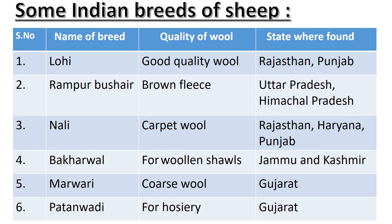After learning about different wool-producing animals, now let us have a look at some Indian breeds of sheep. In our country, we have different breeds of sheep. They all produce different quality of wool and they are found in different states as per their adaptability.